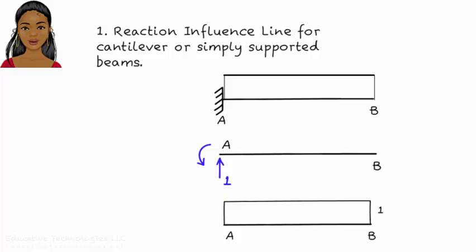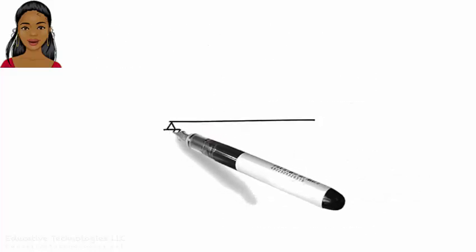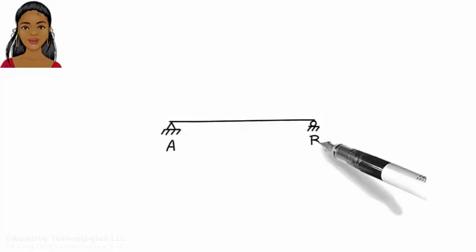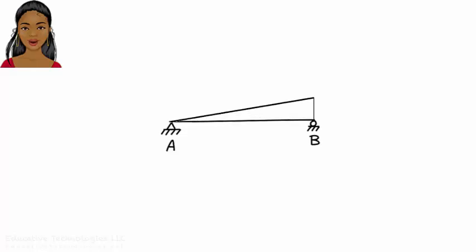Let's put this qualitative approach to use. Here is a simply supported beam. Let's draw the influence line for reaction at B. To do so, we push the beam up by one unit at B and draw the displaced shape that results. Here is the influence line. It tells us that reaction at B reaches maximum when the moving load reaches point B.